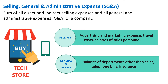The second component is general and admin expense. Think of the salaries of department members other than the sales team — while they are not directly selling the product, they are equally important. The telephone bill of the store or the insurance paid for goods in the store — all these indirect expenses fall under the general and admin category. The selling, general, and administrative expenses put together is what is called SG&A.